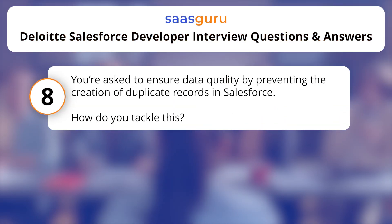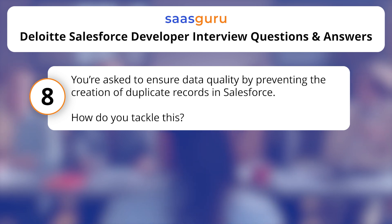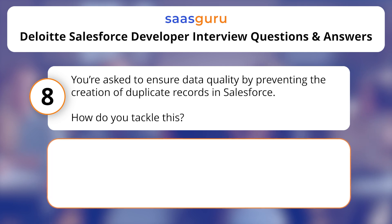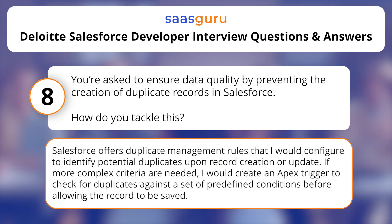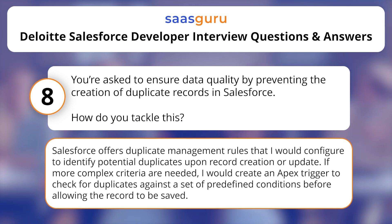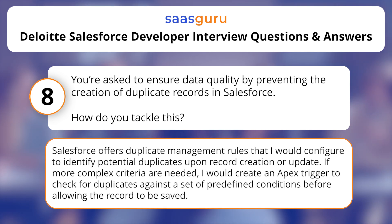You're asked to ensure data quality by preventing the creation of duplicate records in Salesforce. How do you tackle this? Salesforce offers duplicate management rules that I would configure to identify potential duplicates upon record creation or update. If more complex criteria are needed, I would create an APEX trigger to check for duplicates against a set of predefined conditions before allowing the record to be saved.